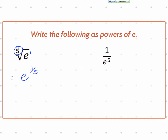What about this other one? We have one over e to the fifth power. I want to write that as a power of e. I don't want that in the denominator. So how do I move this whole thing up? Make it negative. Make what negative? The exponent. Very good. So it's e to the negative fifth power. And that's it.